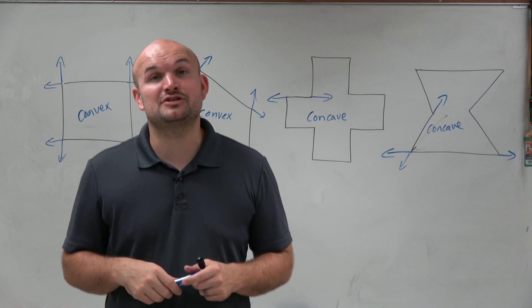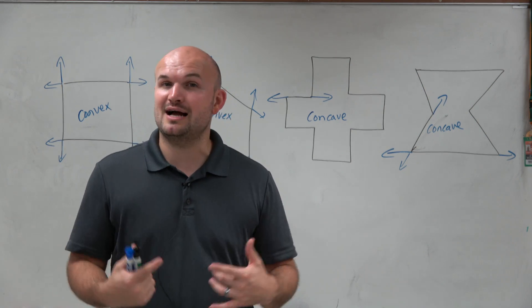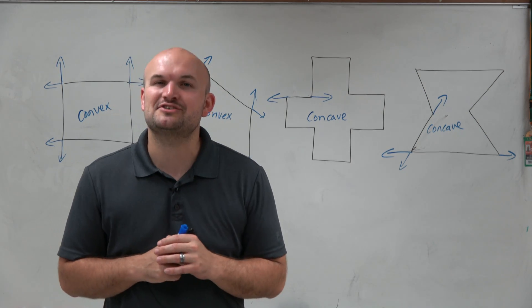So there it goes, ladies and gentlemen. That is how you determine if a polygon is convex or concave. And you have two examples of each. Thanks.